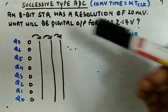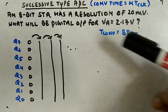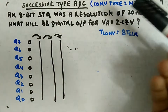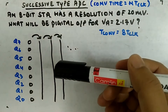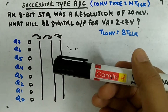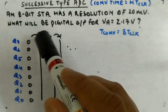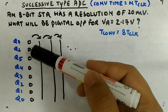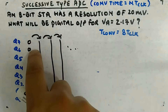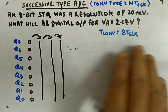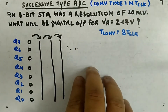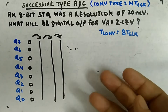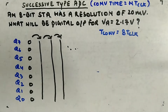One thing you can directly calculate is the conversion time, which is 8 into T-clock, because 8 is the number of bits and that is fixed and constant — it does not depend upon the input. Another thing is, if you use the approach of setting each bit one by one — Q7 to Q0 — initially they are all zero and then each is checked over eight clock cycles, which becomes very tedious.